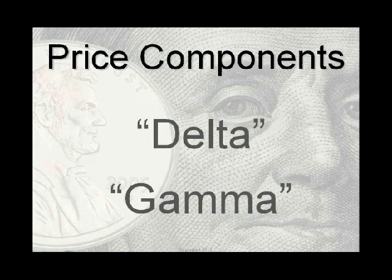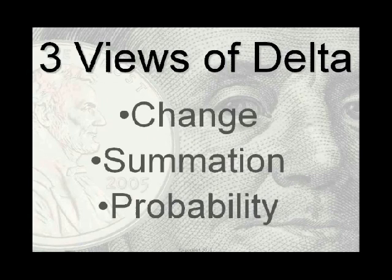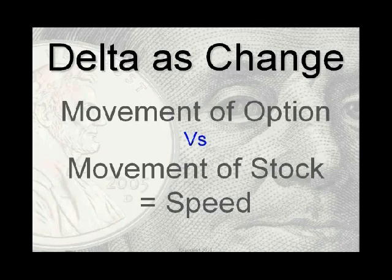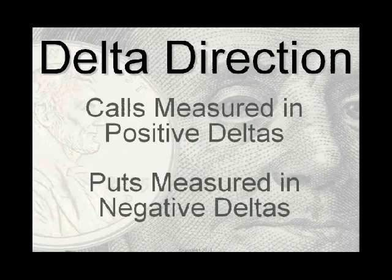We're going to look at how the price and price movement of the stock affects the Greeks — those Greeks are delta and gamma, which I call the price components. You cannot understand gamma if you do not understand delta, so we start with delta. There are three ways of looking at delta: change, summation, and probability. Let's look at change first. When a stock moves in price, the options will move in price, and that movement has a mathematical relationship known as the delta — the movement of the option compared to the movement of the stock.